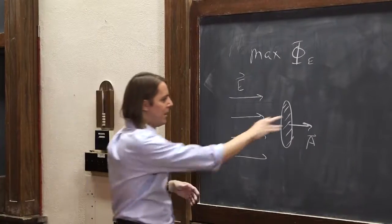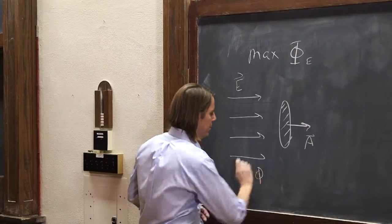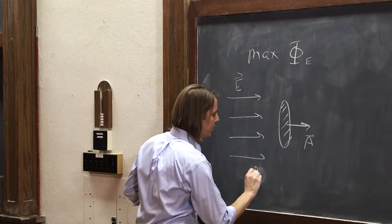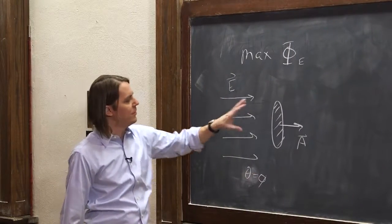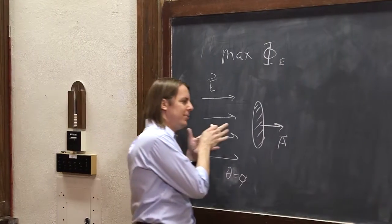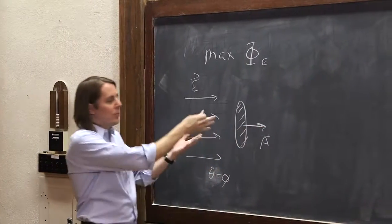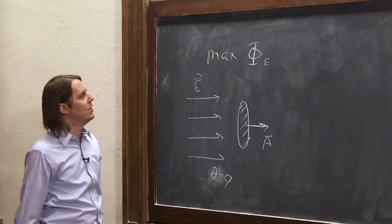That would be the biggest flux you could get because theta equals 0. The cosine of 0 is 1. That is the magnitude of the E field times the magnitude of the A field. And if you just visualize the E field going through the surface, then of course that's the biggest value you can get.